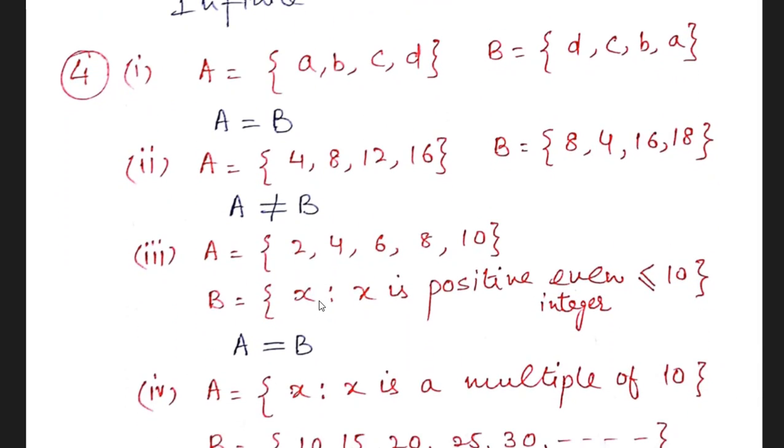Now question number 4. In this question you have to check whether the sets are equal or not. A, B, C, D and same elements are there. A, B, C, D. It means sets are equal.